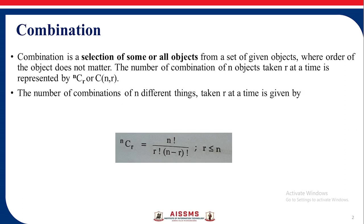The number of combinations of n different things taken r at a time is given by nCr equal to n factorial upon r factorial into n minus r factorial where n is greater than or equal to r.